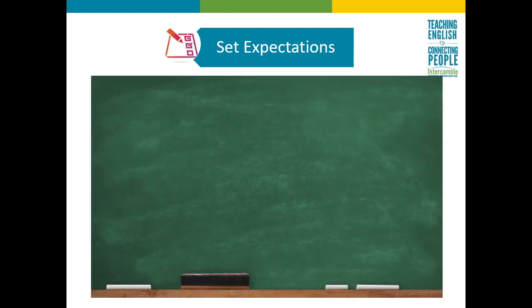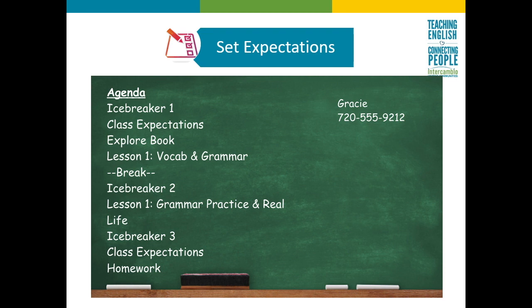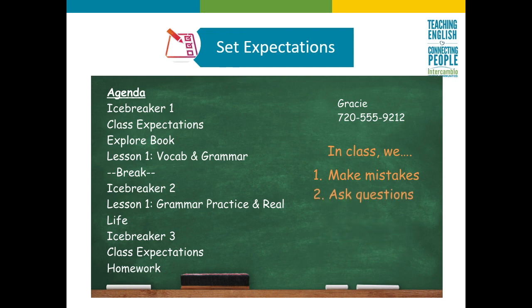After the first icebreaker, you'll want to set some expectations for your students. Pick three things you think are important and make them as simple as possible. For example, one expectation can be around making mistakes — it's not just good to make mistakes, they're a necessary part of learning, and students should feel comfortable making mistakes in class. Another expectation might be making sure that students are comfortable asking questions. And perhaps a third could be to make sure that students are having fun. For higher level students, you can make this more of a discussion by asking 'why is it important?' after each one.